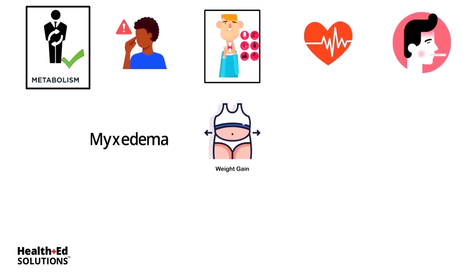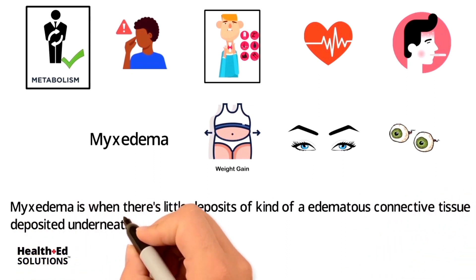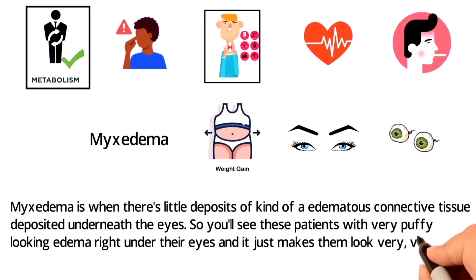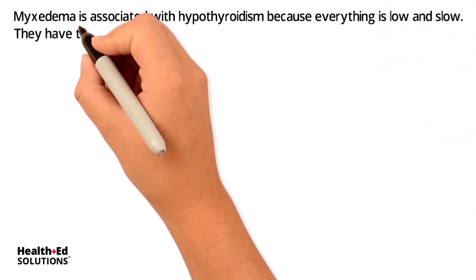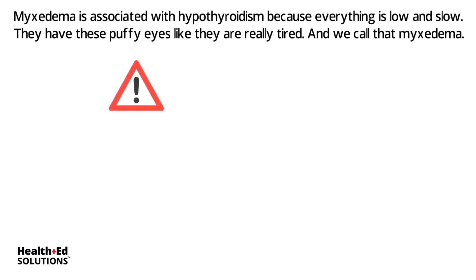What's unique to hypothyroidism is something called myxedema. With hyperthyroidism we have exophthalmos — those bulging eyes — but with hypothyroidism you have myxedema. Hypothyroid patients will be edematous and puffy, and myxedema is when there are deposits of edematous connective tissue underneath the eyes. You'll see these patients with very puffy-looking edema right under their eyes, making them look very tired. That's how I remember that myxedema is associated with hypothyroidism — everything is low and slow with puffy, tired eyes.